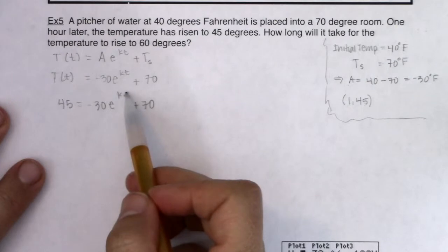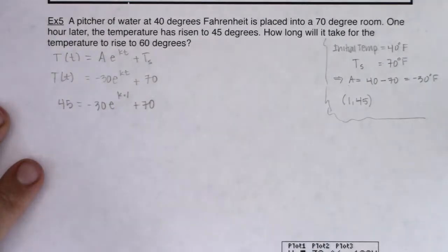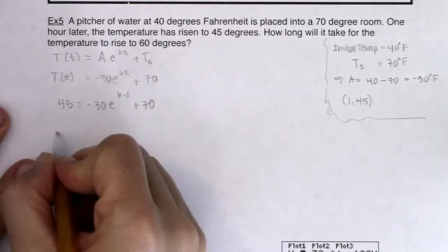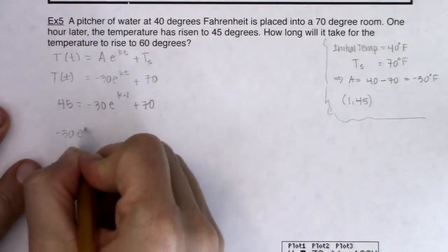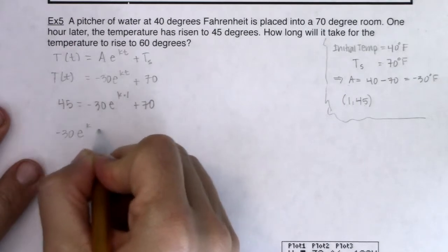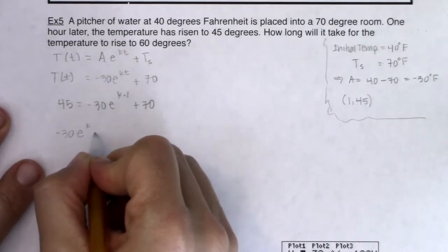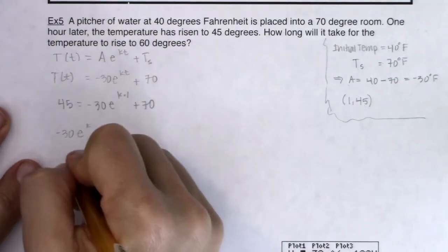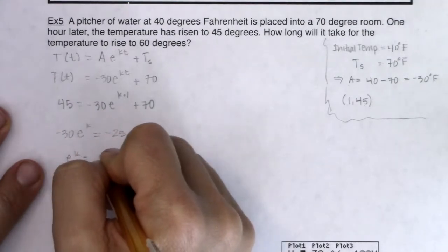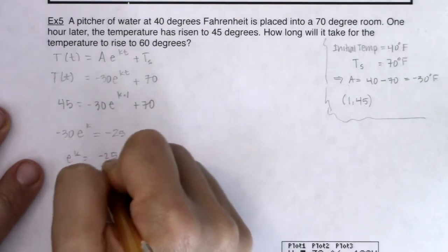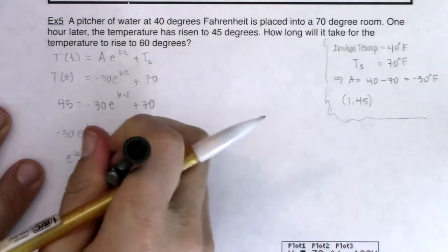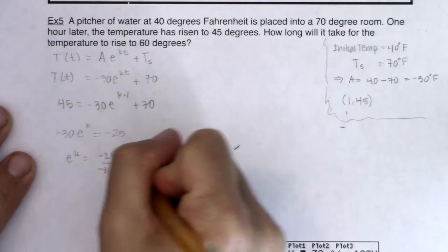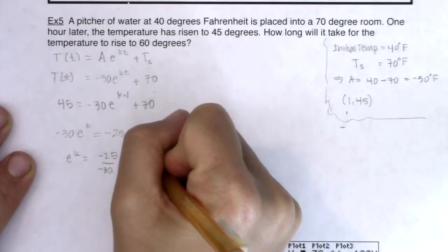Now K's up in an exponent of this power. So I need to isolate this term. And once I isolate that term, then I can log both sides. But if I want to isolate this, I'm going to write this term on the left side. So I have negative 30, E to the K is going to need to be equal to, 45 minus 70 is negative 25. So I know E to the K will be equal to negative 25 over negative 30, which will ultimately be 5 sixths.